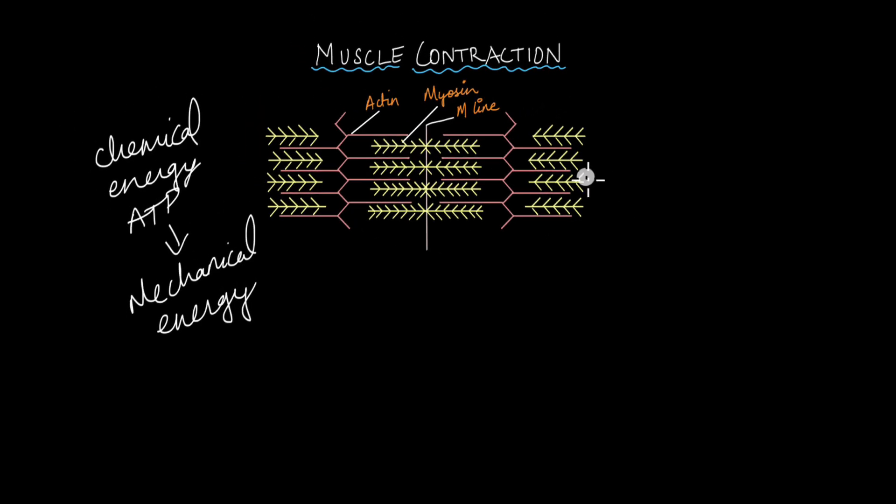Muscle contraction happens because of these two proteins in our muscle cells which is actin and myosin. You must be quite familiar with this diagram of a sarcomere, if you are not, I would suggest checking out our video on muscle fibers. So the actin and myosin filaments that make up the sarcomere, they are what are involved in muscle contraction. Basically when they bind to each other, that is when the muscle contracts.